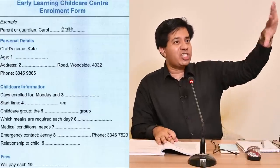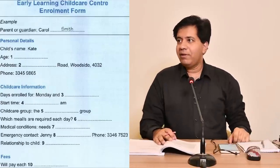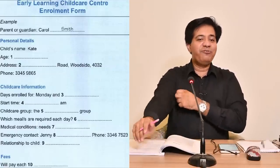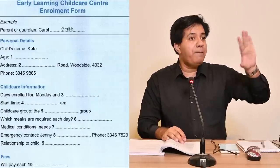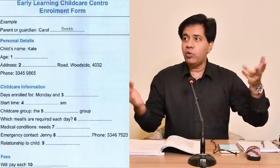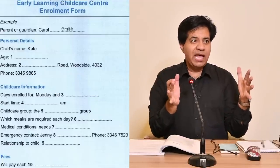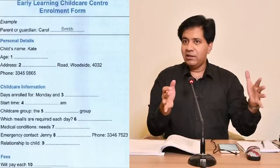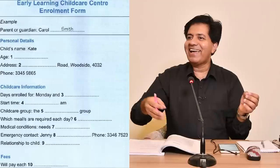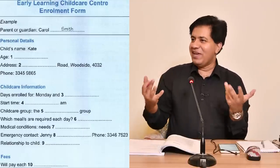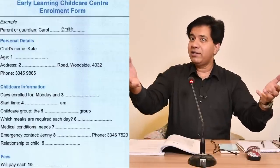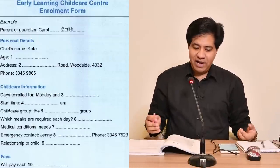Last question, number 10: fee — will pay each what? If there is an amount they use a currency sign, but there is no currency sign here, so the answer is a time period: each week, each month, each semester, each quarter, or each year.